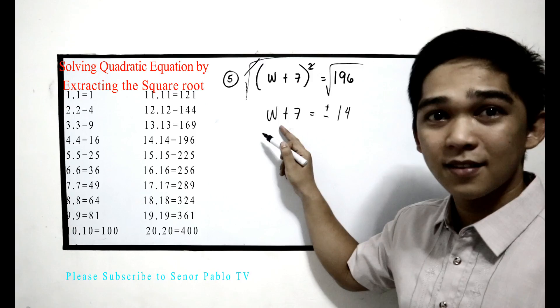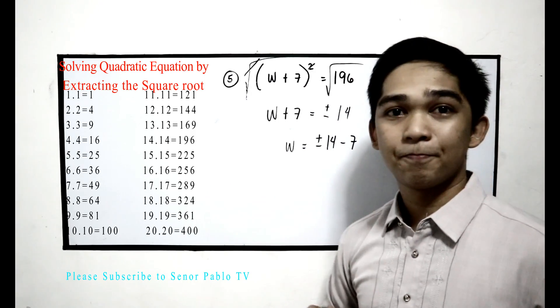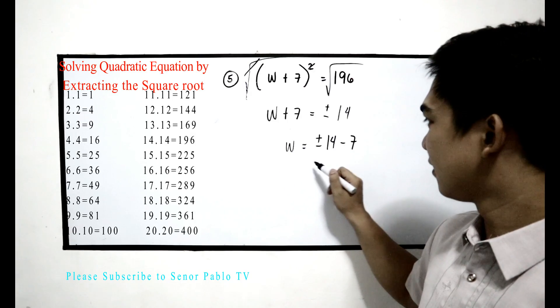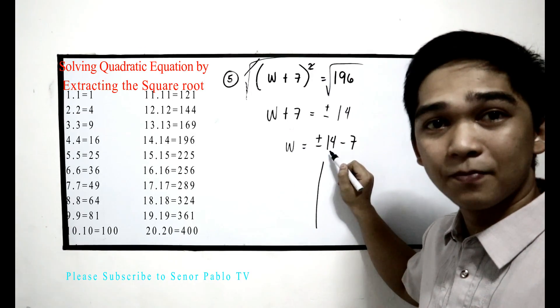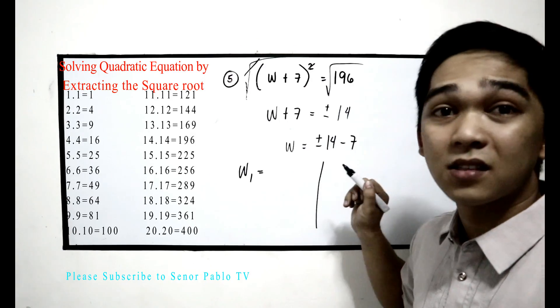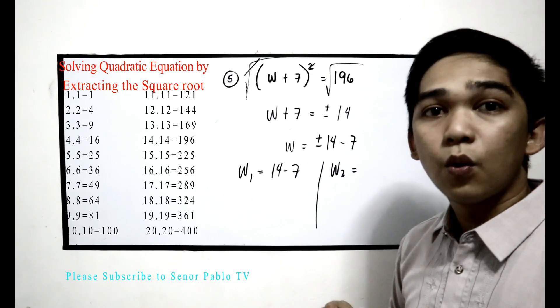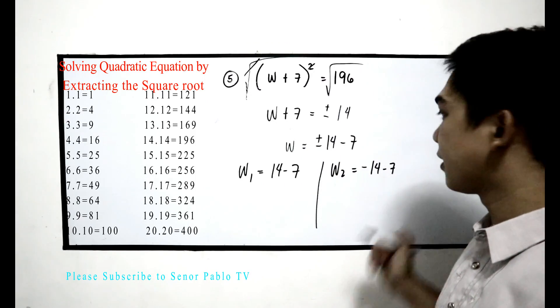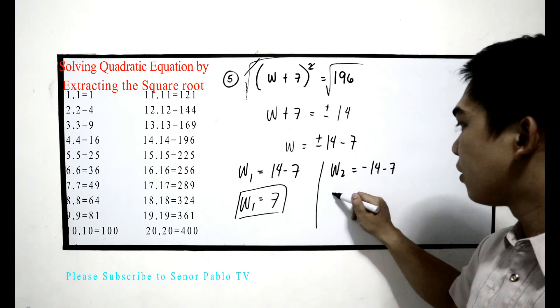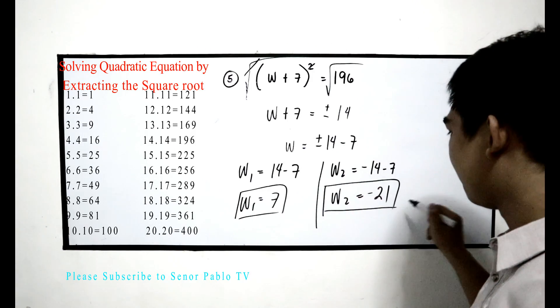Now transpose positive 7. w = ±14 - 7. Find the value of w. Since we have ±14, we have w₁ with the positive sign: 14 - 7 = 7. And w₂ with the negative sign: -14 - 7 = -21. So w₁ = 7 and w₂ = -21.